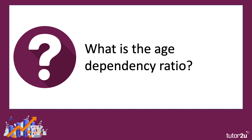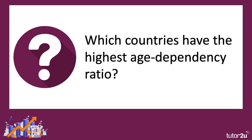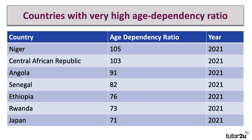Another concept in this debate is the age-dependency ratio. This ratio is a ratio of dependents — that's people younger than 15 or older than 64 — to the working age population, that's people aged between 15 and 64. Which countries have the highest age-dependency ratio? Here's the data. You can see that Niger and the Central African Republic have an age-dependency ratio of above 100. Angola: 91. Senegal: 82. Japan: 71, though with Japan the key point is that it is an old age-dependency ratio rather than a general one.